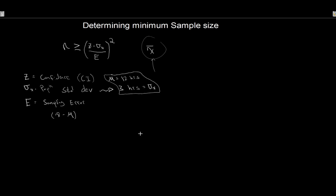We want to conduct this for a 95% confidence interval, and we want our estimate to be within 15 minutes of the true population mean. Keep in mind the data is in hours, so 15 minutes equals 0.25 hours. We now have everything we need to calculate the minimum sample size.